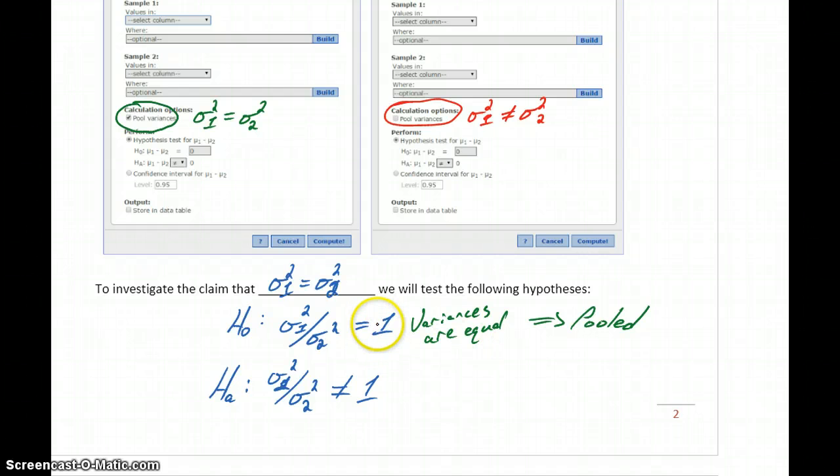If we have enough information to reject the null hypothesis, we conclude that there's some difference, which implies that we run the two-sample t-test, which means we need to uncheck that pooled variances box.